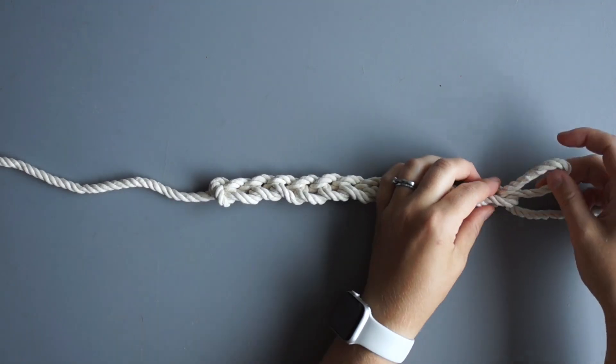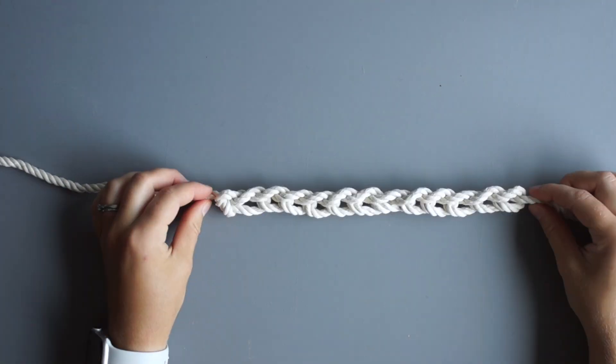To finish off your chain, pull on the last loop so that the tail end is pulled through the previous loop.